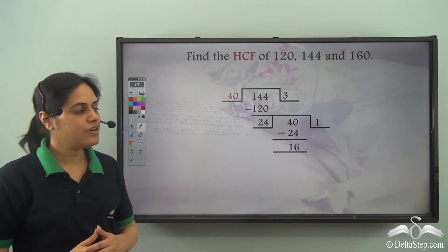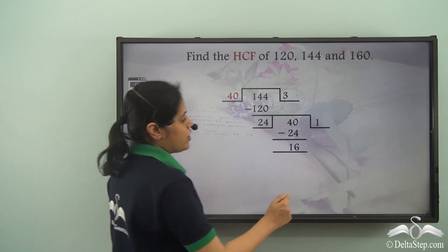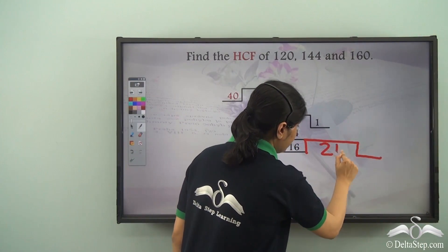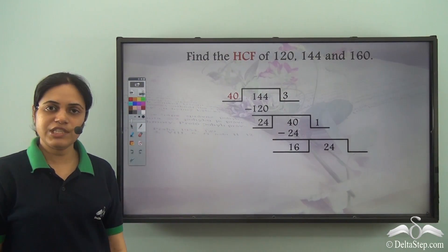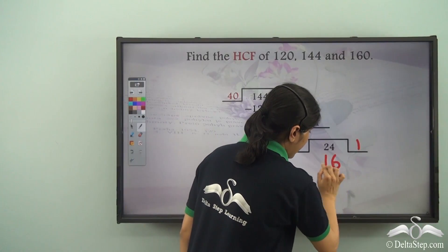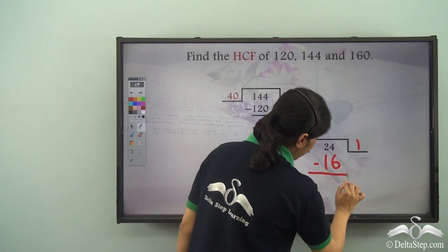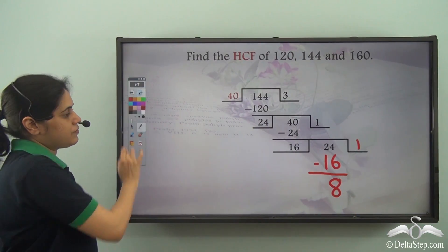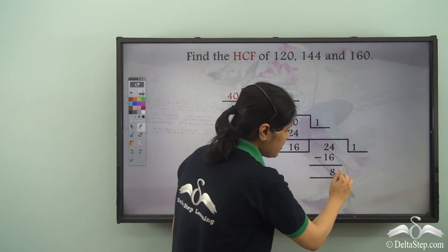This is what we have. Now 16 is the remainder, so it will now divide 24. 16 goes into 24 one time, and I subtract to get the remainder 8. This is what I have. Now 8 is the remainder.